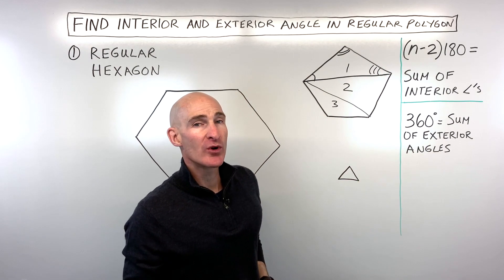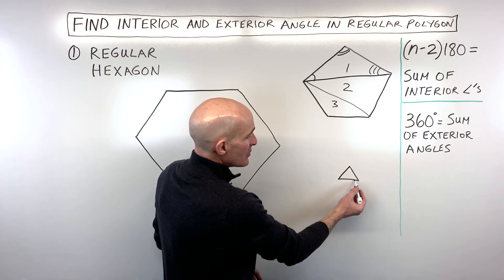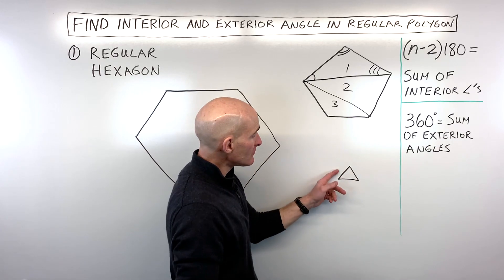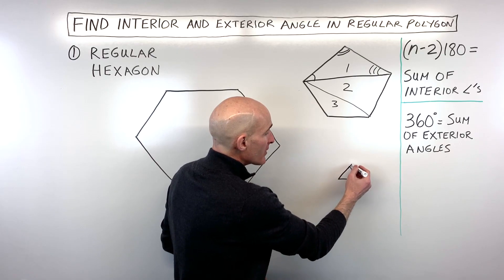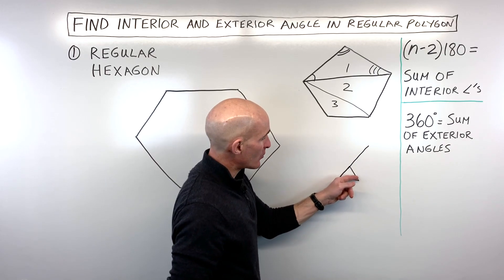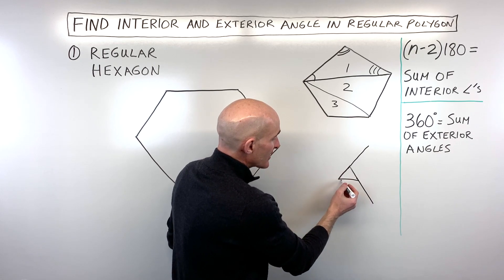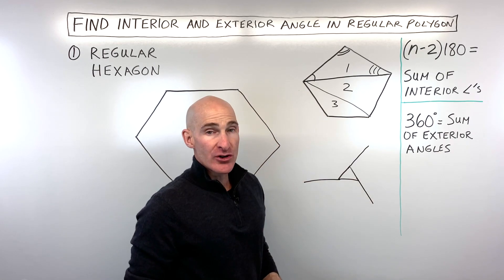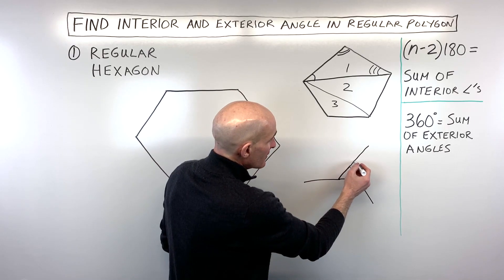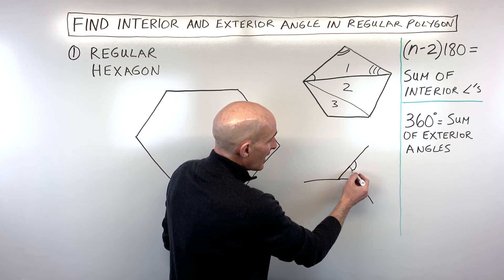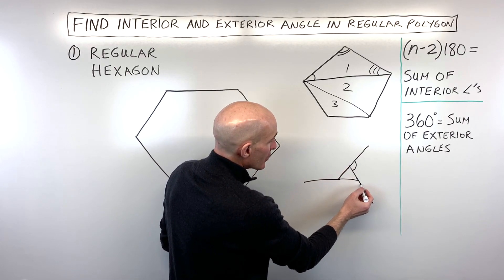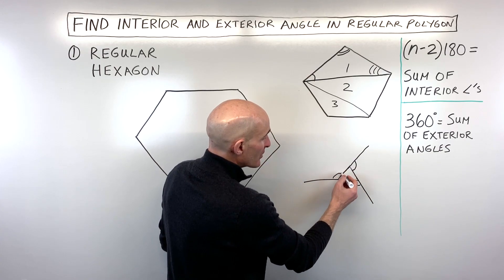Now, for the exterior angles, what an exterior angle is, is say you have like a little triangle like this. If you extend one of the sides of the polygon—it doesn't matter whether you extend this side or this side, just one side at each vertex—the exterior angle is the angle that's formed between that extended side and the polygon. So you can see here that we have three exterior angles.